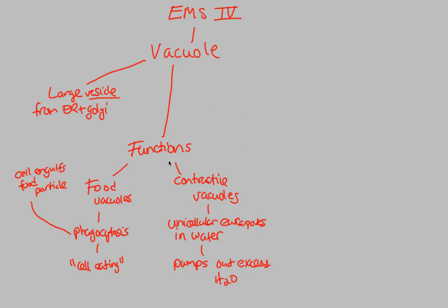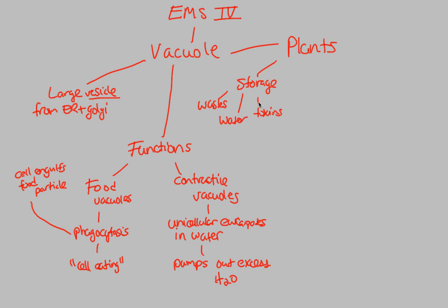In addition to these functions, plants also have a major reliance on vacuoles, which helps explain the way that plants grow. Plants use vacuoles for storage first and foremost — this includes storage of waste, water, and toxins. Vacuoles provide a place to hold waste, toxins, and water for however long necessary before they are removed, making them a good stepping stone for that process.